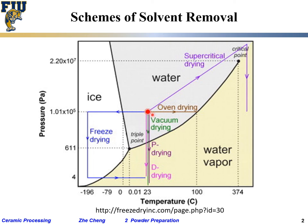For conventional oven drying, you have liquid together with suspension and put them in a conventional oven in air at one atmosphere. As you heat it up, more and more of the water becomes vapor phase — that's how you remove the solvent. Alternatively, without heating, you can use a vacuum pump to decrease pressure, which causes liquid water to evaporate into the gas phase to maintain equilibrium.